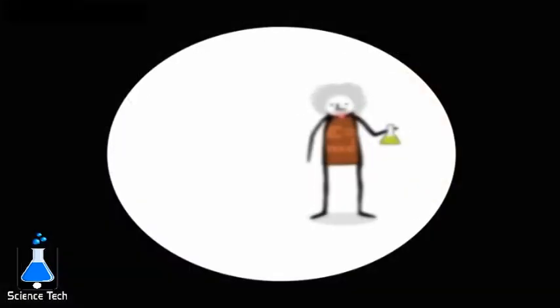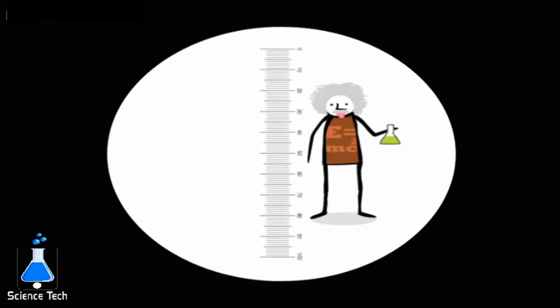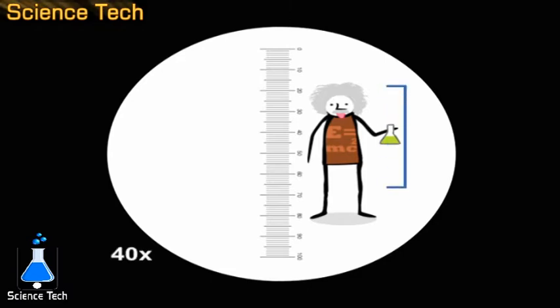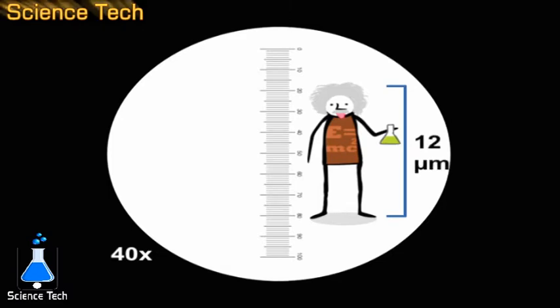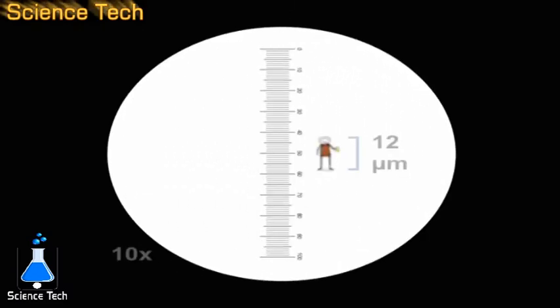To help estimate the size of objects under the microscope, an eyepiece reticle, a scale that's projected over the image, can be used. At higher magnification, the tick marks in the eyepiece reticle will represent smaller distances than when viewed at lower magnifications.